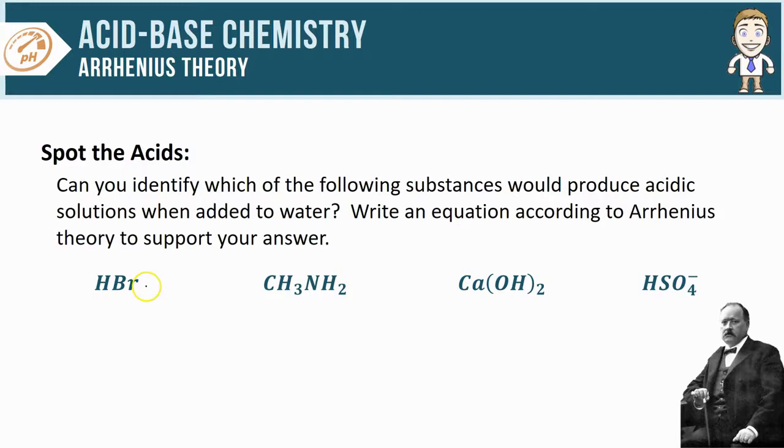Now let's take a look at the answer to this. Out of these four there are two particles that will produce acidic solutions in water: HBr and HSO4 minus. Calcium hydroxide contains hydroxide ions so it will clearly function as a base, and CH3NH2 much like ammonia NH3 will not function as an acid and will instead function as a base.